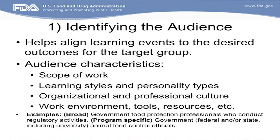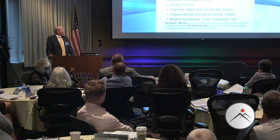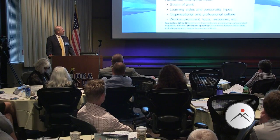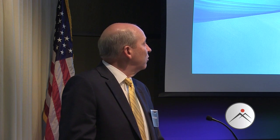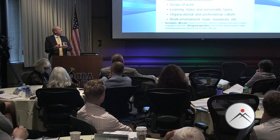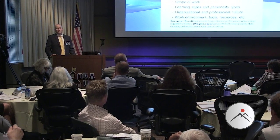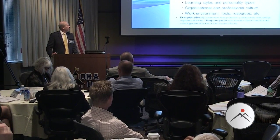At the bottom you see examples: a broad statement like 'government food protection professionals,' and more specific ones like 'animal feed control officials.' Training good for both industry and regulators would be a little broader, because the scope and what those two different groups do could differ significantly — there may be some things that are the same, but there may be a lot of things that are different. So that training or treatment will be different.